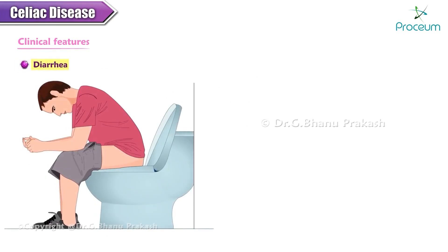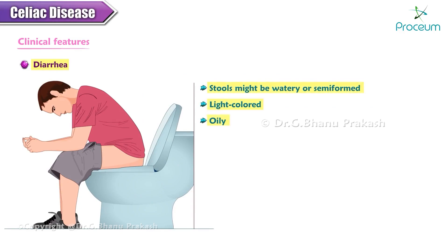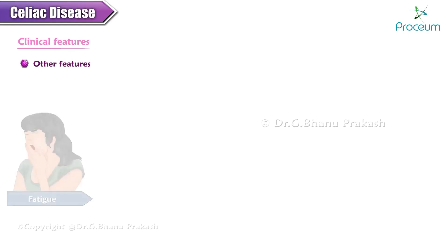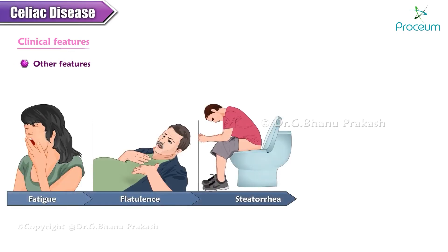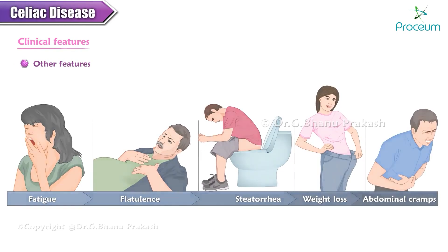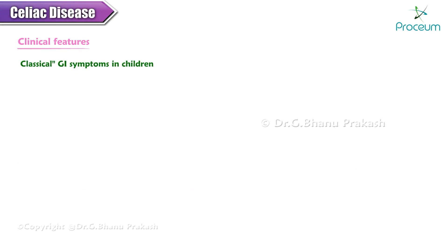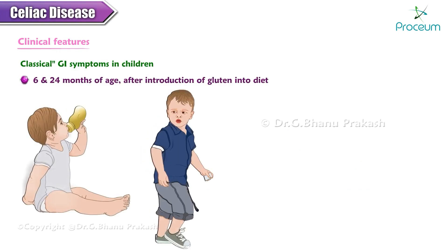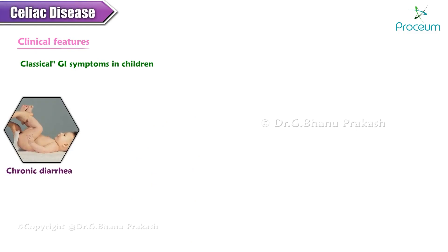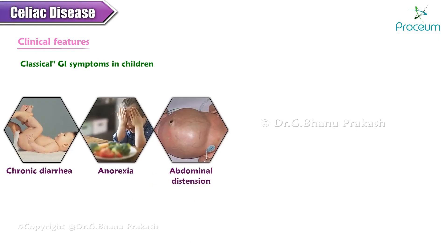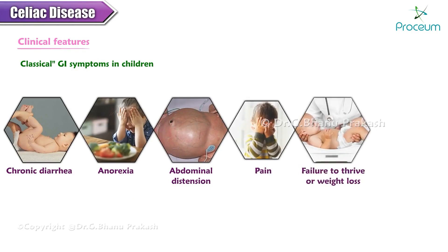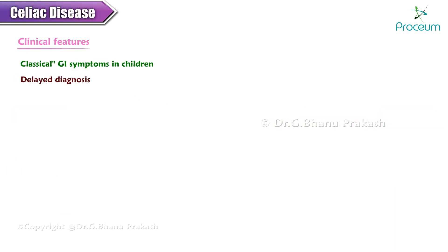In the adult population, the disease predominantly presents with diarrhea in which stools might be watery or semi-formed, light colored, oily and frothy with a characteristic foul odor. Other features include fatigue, flatulence, steatorrhea, weight loss, and abdominal cramps. In children, celiac disease classically presents between 6 and 24 months of age after the introduction of gluten into the diet, with chronic diarrhea, anorexia, abdominal distension and pain, and failure to thrive or weight loss. Some may also have vomiting, and if diagnosis is delayed, children may present with signs of severe malnutrition.